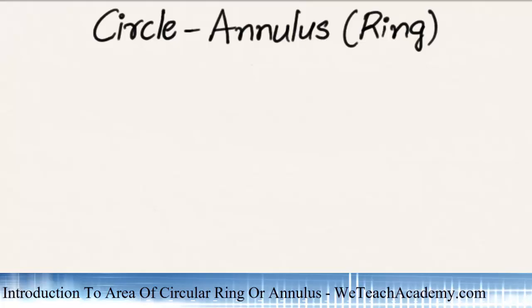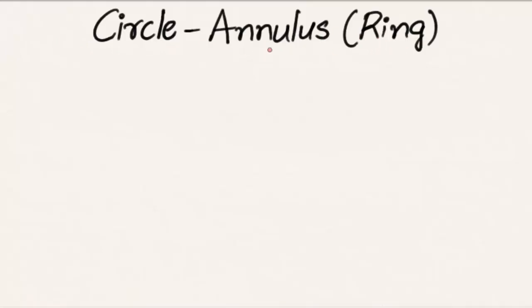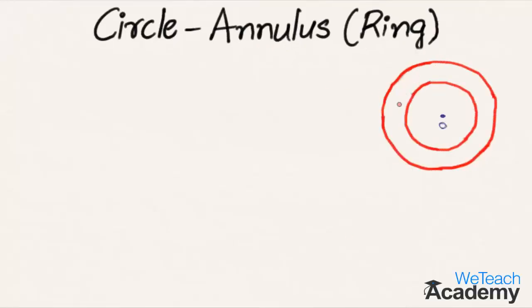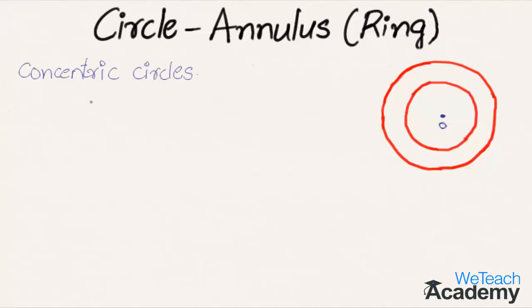Welcome to VTCHAcademy.com. In this presentation we are going to discuss circle annulus or ring. Here we have two circles of different size with the same center O. Such circles are called concentric circles, and the region between the two concentric circles is called an annulus or ring.